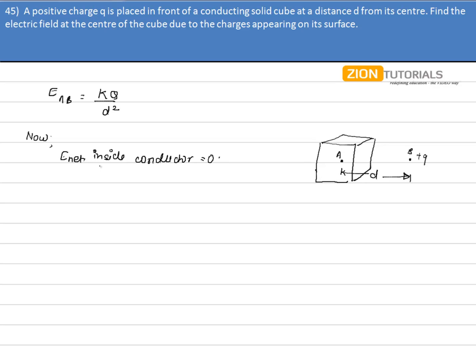So the charge that will appear on the surface of the cube will be such that the net electric field at point A will be equal to zero. So E_net at point A should be equal to zero.